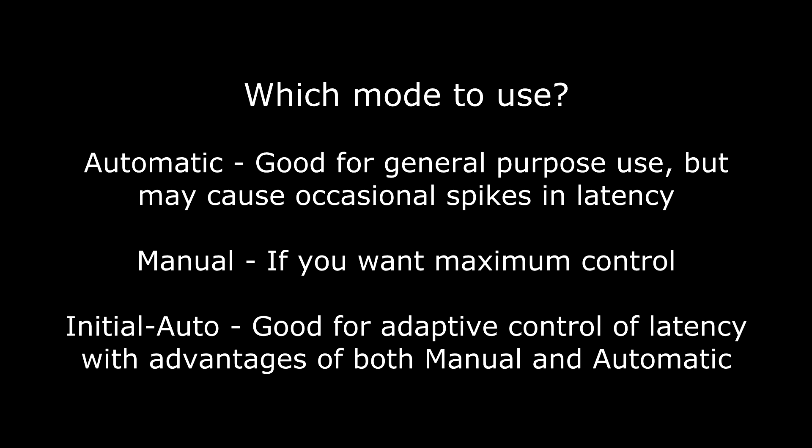I use initial automatic as my primary jitter buffer mode when using Sonobus — it provides a nice balance between the automatic and manual modes. If you want Sonobus to manage the jitter buffer all the time, select automatic mode, but it may occasionally cause large spikes in latency. If you want maximum control, select manual mode. If you want Sonobus to initially recommend a jitter buffer size but be able to re-optimize it at any time, select initial auto mode.